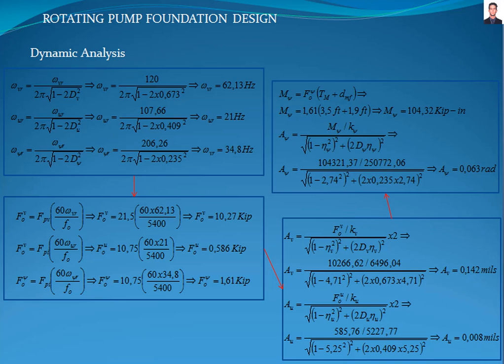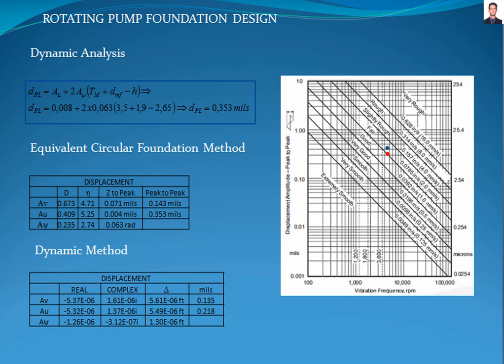The final step is to calculate the peak-to-peak amplitude for the rocking case. First, we calculate the rocking moment with this equation, where TMN is the distance from the machine center line to the top of the foundation, giving a result of 104.32 kilopound-inches. Now we proceed to calculate the displacement generated by the rocking moment, giving a result of 0.063 radians. The rocking displacement shall be added to the horizontal displacement to obtain the maximum displacement due to the coupled horizontal and rocking action, calculated with this equation, where TPL is the maximum horizontal displacement due to the coupled horizontal and rocking action, giving a result of 0.353 mils. The final peak-to-peak amplitudes of the foundation due to the action of the pump machine are shown in this table.